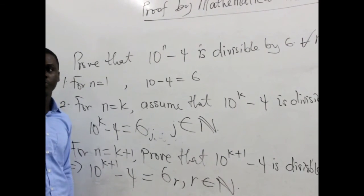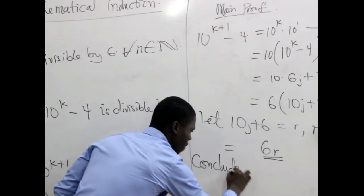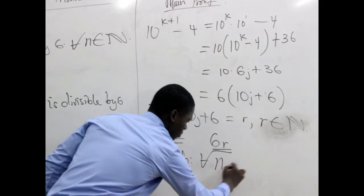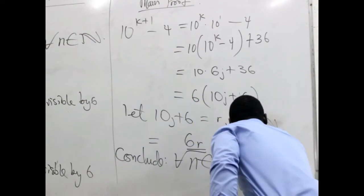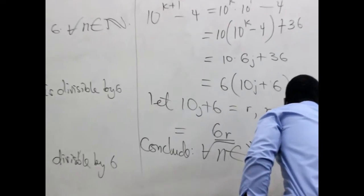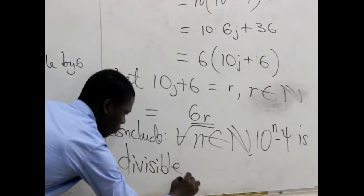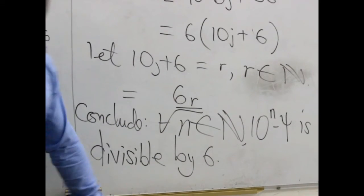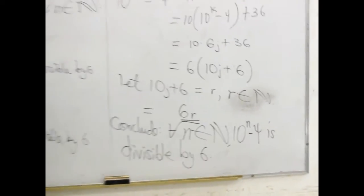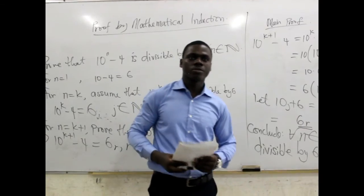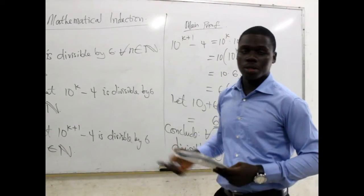So the proof is there. At this stage we can confidently conclude that for all n belonging to the set of natural numbers, 10 to the power n minus 4 is divisible by 6. That ends it, the proof is there. Yeah, that will be all for now. Catch you again in our next lesson where we look at more examples on this. Thank you very much.